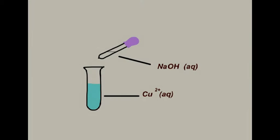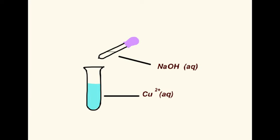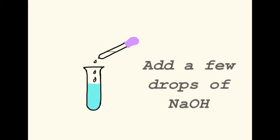Another kind of test for positive ions is the precipitation test. In this, a few drops of sodium hydroxide solution are added to a solution containing the unknown positive ion.